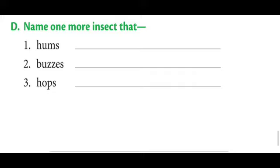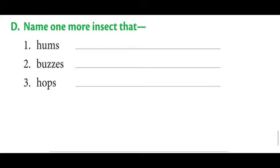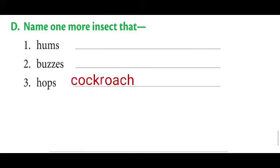Then name one more insect that hums. You can write mosquito — mosquito hums. Second, an insect that buzzes: the sound of a wasp or fly is called buzzing, so you can write fly or wasp. Third, hopping: the movement of a grasshopper and also a cockroach is called hopping, so you can write cockroach there.